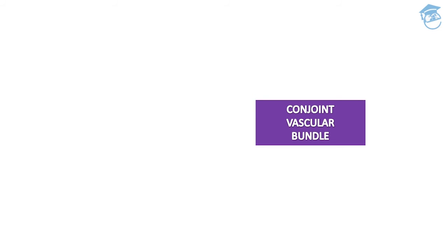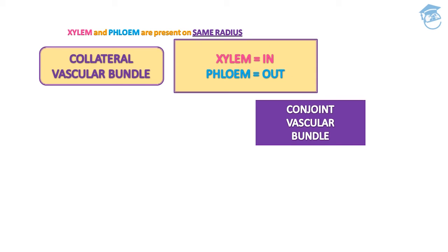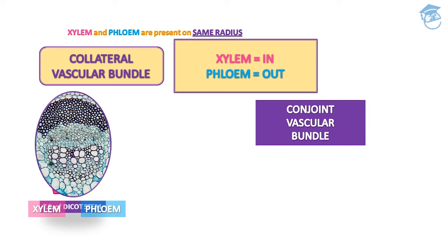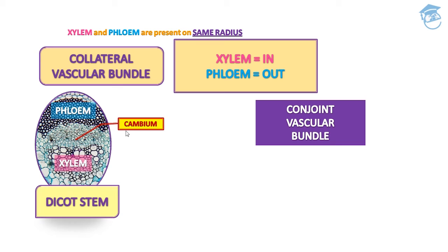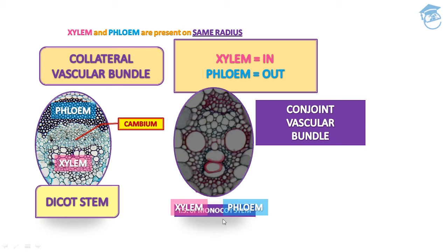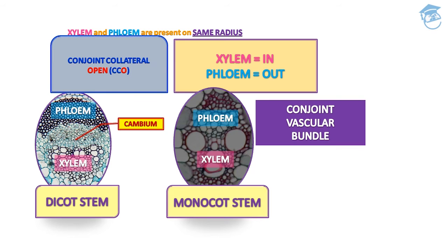The second type is the conjoint vascular bundle, wherein xylem and phloem are present on the same radius. The collateral vascular bundle has xylem oriented inside and phloem oriented outside. When cambium is present between xylem and phloem, as seen in dicot stems, it is called conjoint collateral open type. When no cambium is present, as in monocot stems, it is called conjoint collateral closed type.